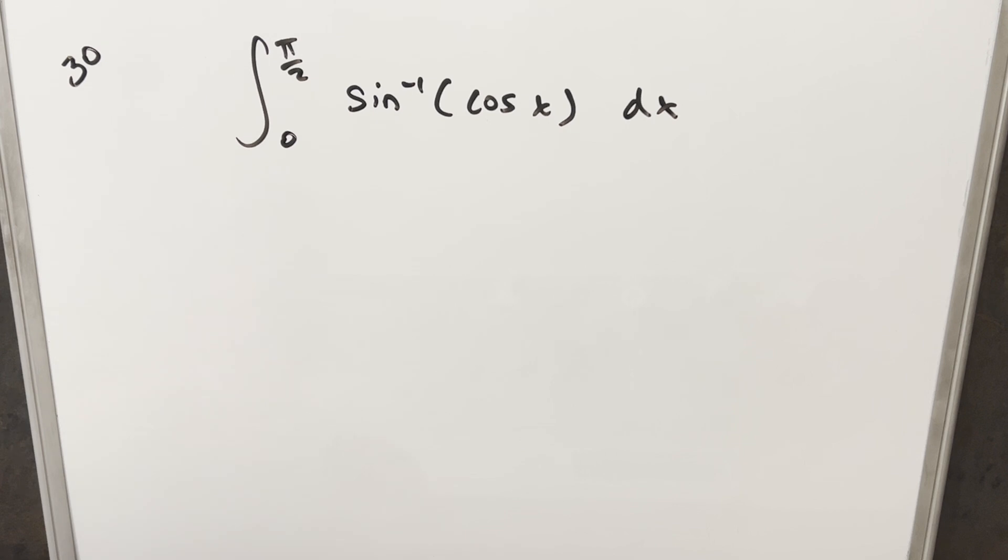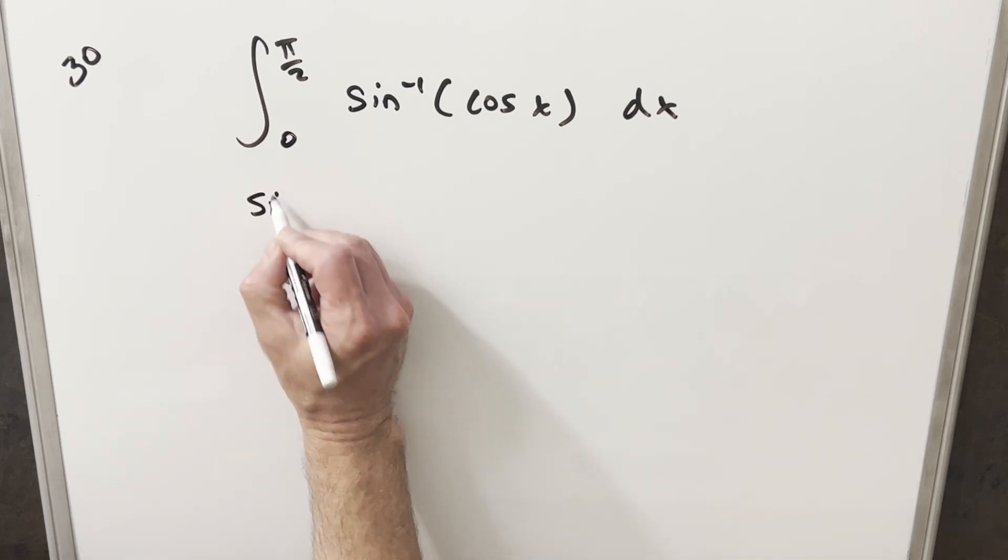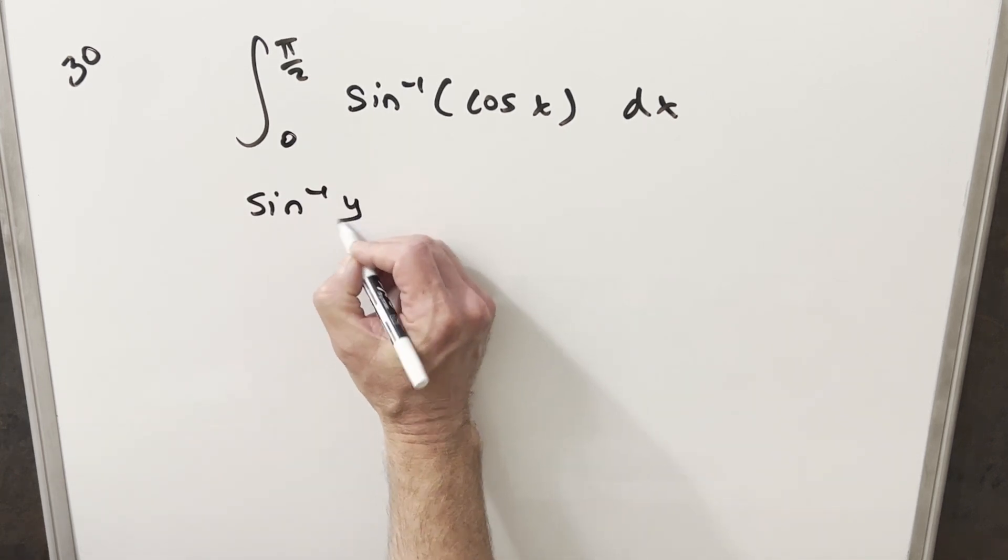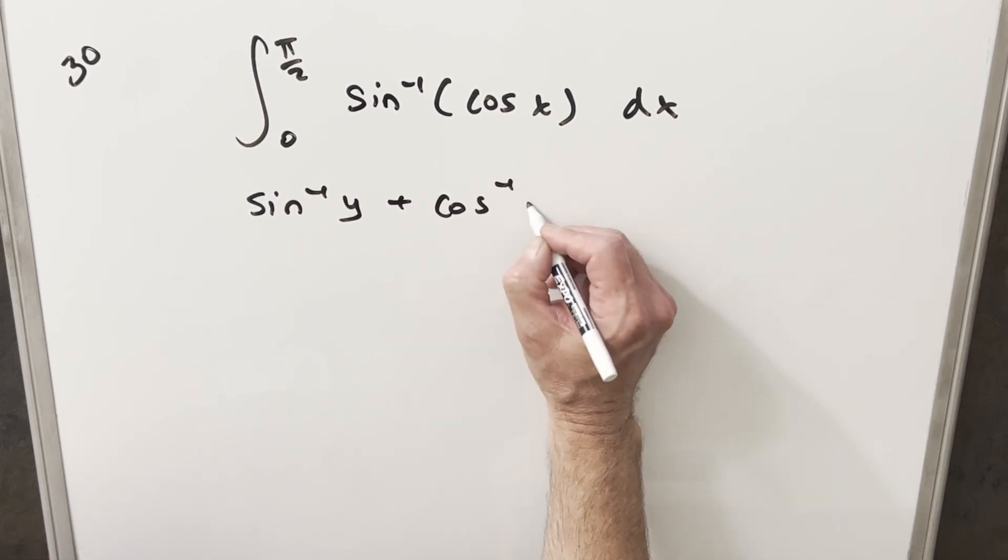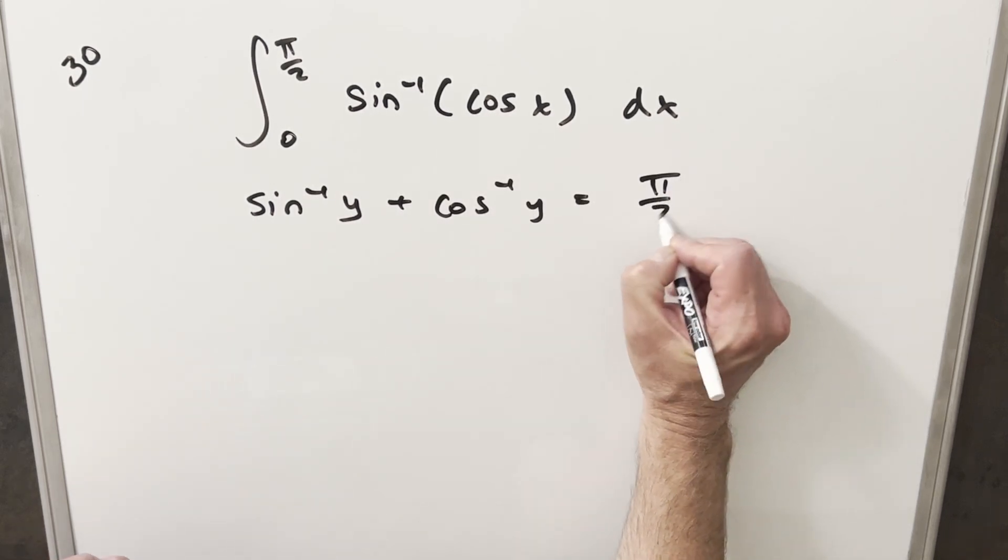For my first step on this, there's a really nice formula that's going to help us. If we have arcsin of some variable, let's say y, plus arccos of y, this is just going to be π/2.